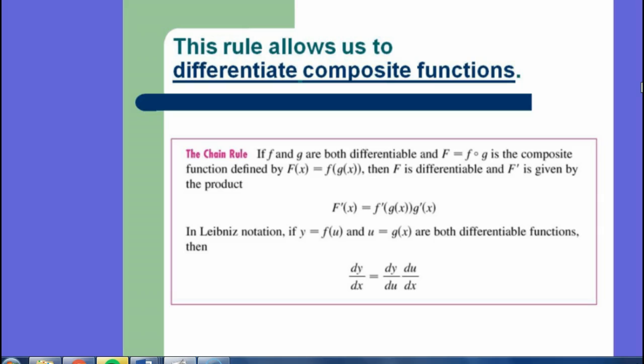So, the chain rule is a way to differentiate what we call composite functions. If you think about a composite function, it's the idea or concept of having a function inside another function. When you have something like x squared plus 2 inside parentheses, and then you square that whole function, that's actually a composite function. It's two functions that make up a whole.